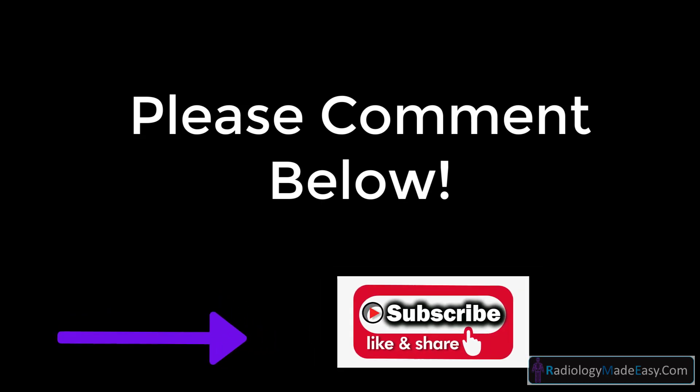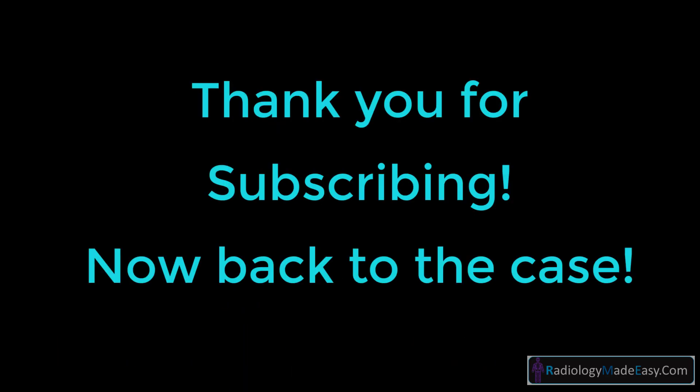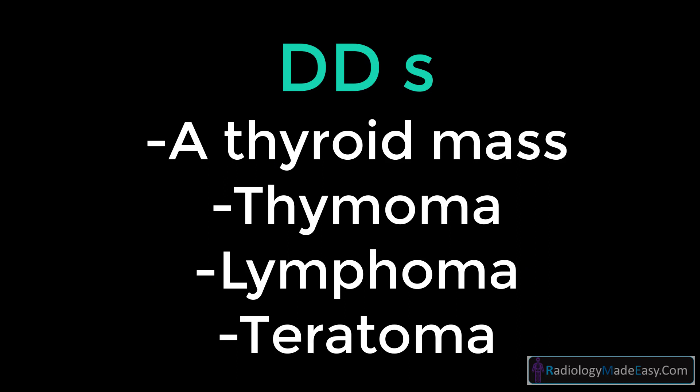In an adult, the differential diagnosis includes a thyroid mass — the mass could be a downward extension from the thyroid gland. However, in this case the mass is clearly separated from the superior mediastinum. It can also be a thymic tumor like a thymoma. Lymphoma is another possibility, and finally it can also be a teratoma.